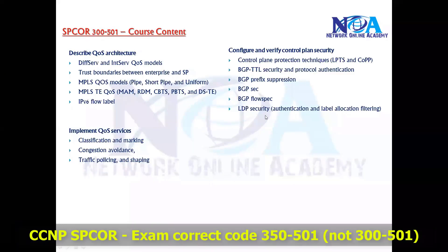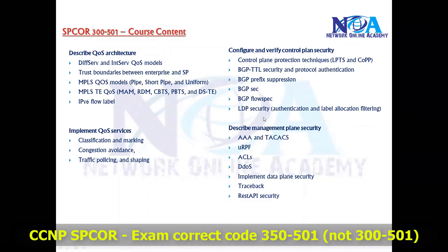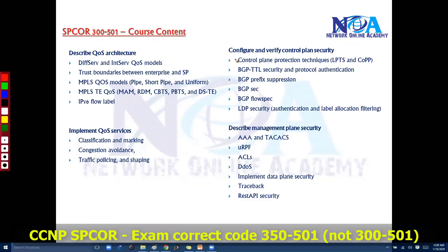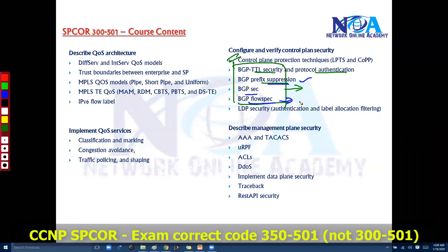Next, we have sections on security — specifically control plane security: protecting the control plane and BGP. For BGP, we have BGP TTL security options, authenticating BGP peers, limiting prefix suppression, and BGP-Sec, which is an extension of BGP for validating BGP updates. We also have BGP Flowspec, which is used to prevent denial-of-service and distributed denial-of-service attacks.